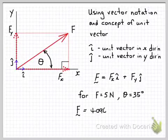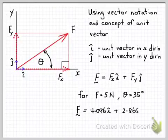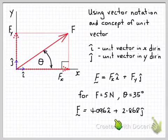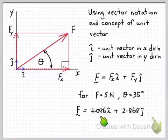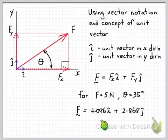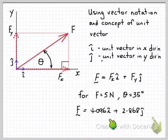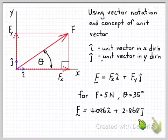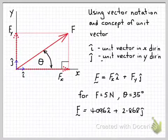Okay so just doing that the vector force equals 4.096 i plus 2.868 j and that now defines completely our vector F of 5 newtons at 35 degrees to the x axis. But instead of having to write 5 newtons at 35 degrees we now have 4.096 i indicating the i component or the x component and 2.868 j indicating the magnitude of the force in the y direction.